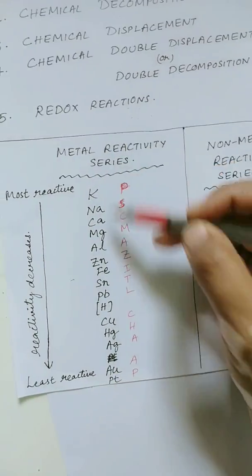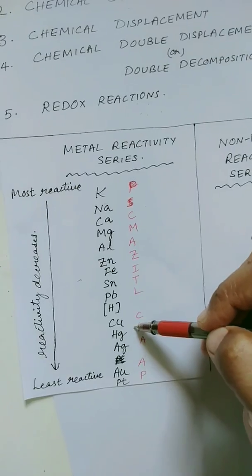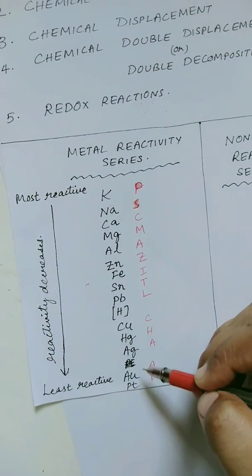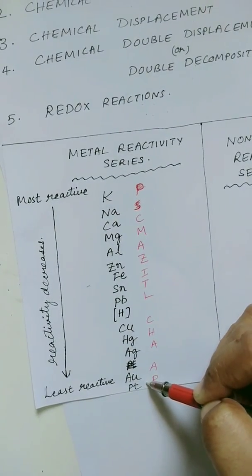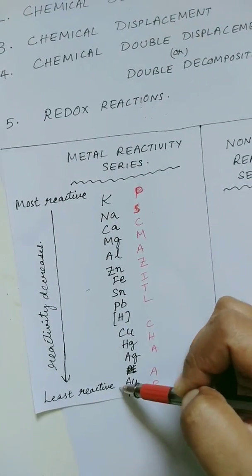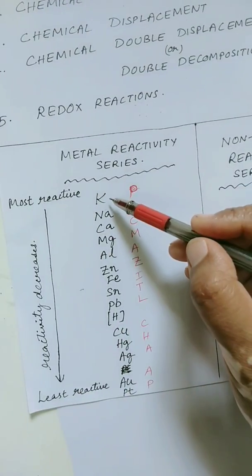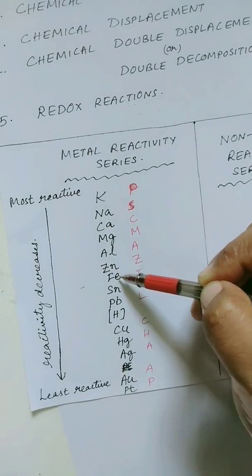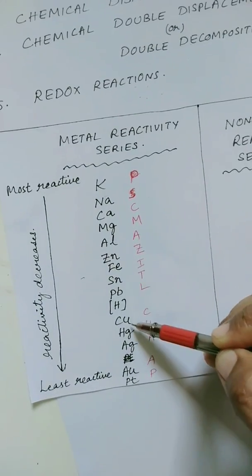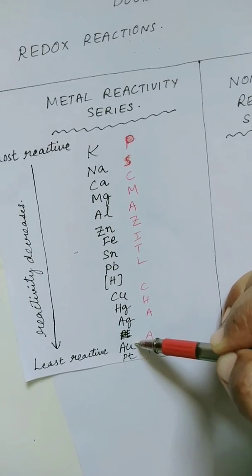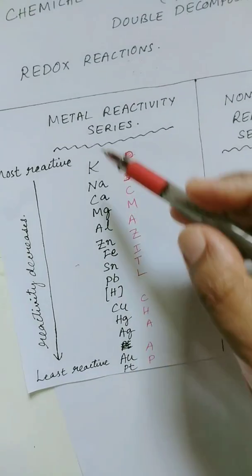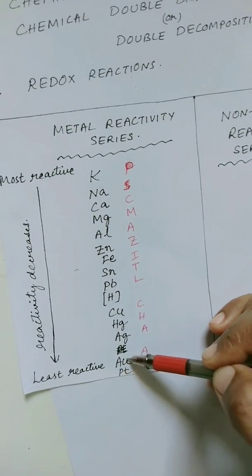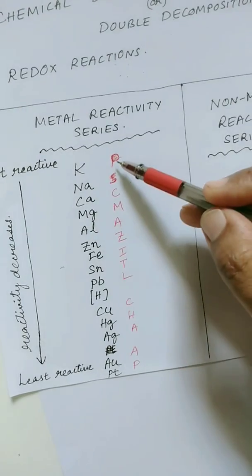We have already learnt this in our 8th class. You can see this is the metal reactivity series starting from potassium and continuing till platinum. From top to bottom, the reactivity decreases. We have potassium, sodium, calcium, magnesium, aluminium, zinc, iron, tin, lead, hydrogen, copper, mercury, silver, gold, and platinum. Potassium is the most reactive element and platinum is the least reactive. You can use a mnemonic to memorize these — for example, PSC Mazet L chap — using the first letter of each element. You can remember this in your own way.